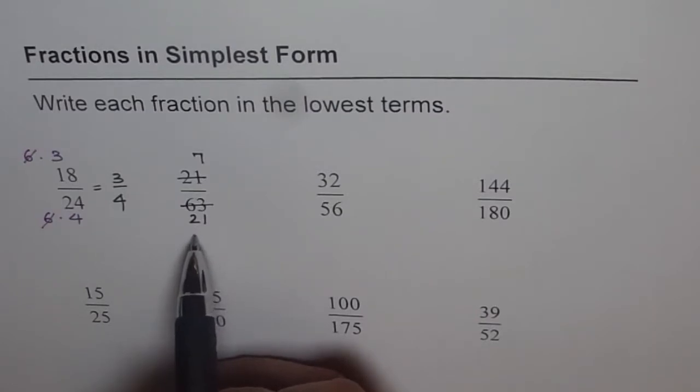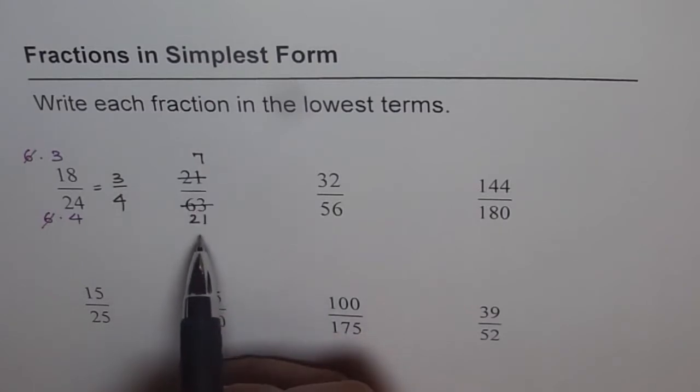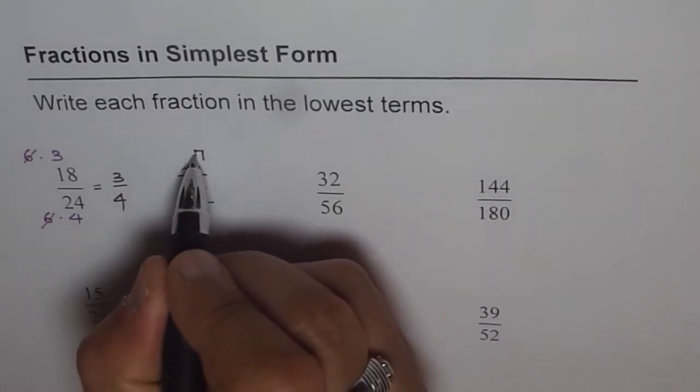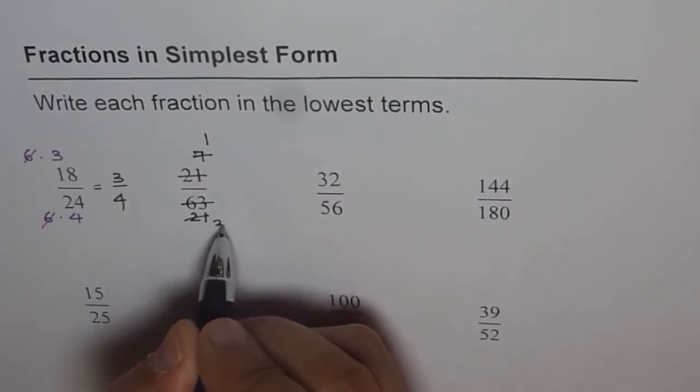That means 7 should be a factor of 21. It is so. So 7 times 3 is 21. We can divide both by 7. So if I divide 7 by 7, I get 1.